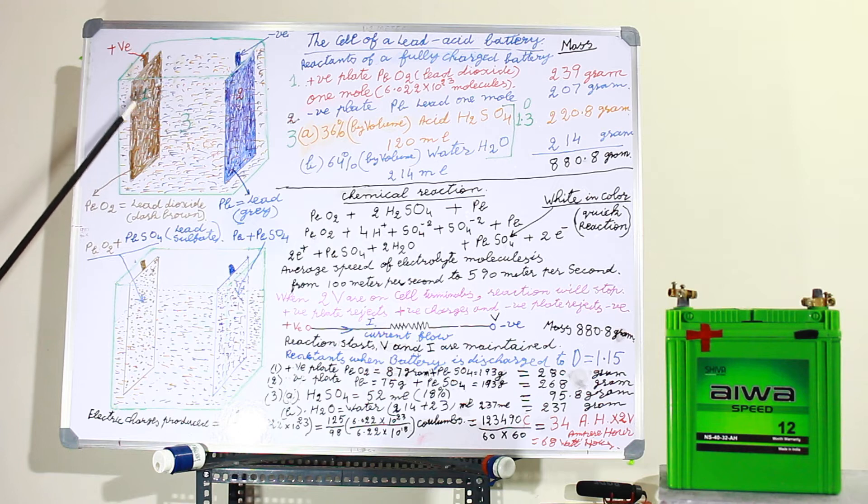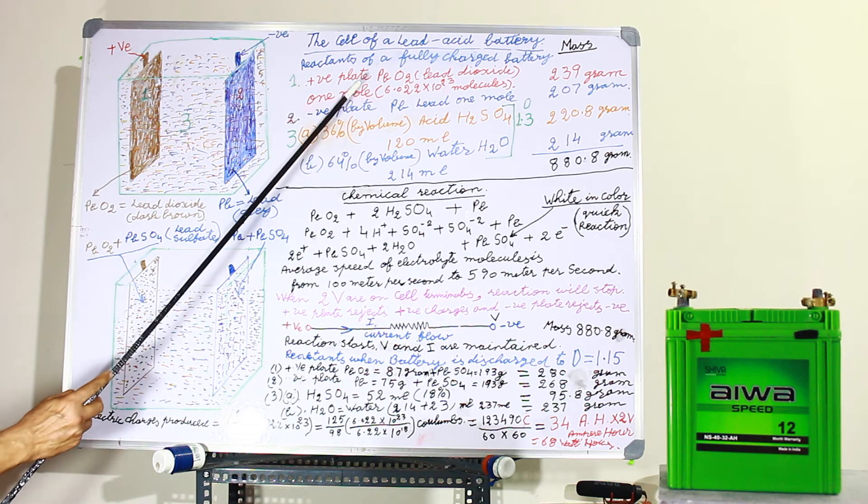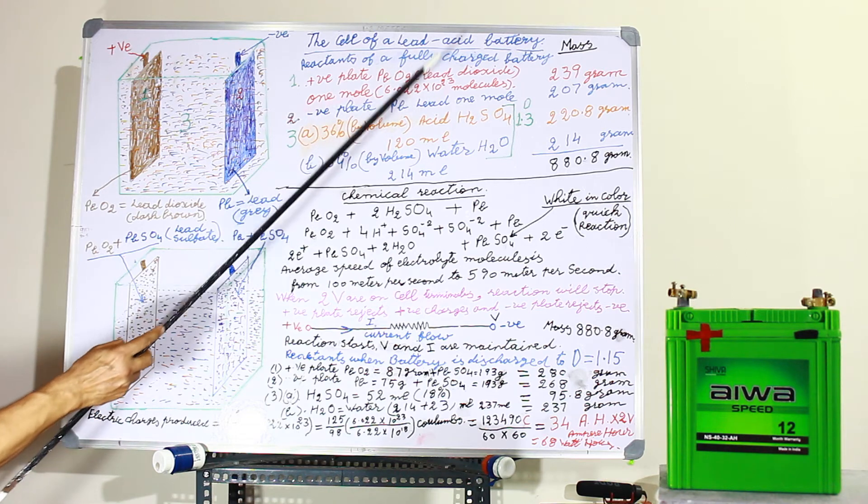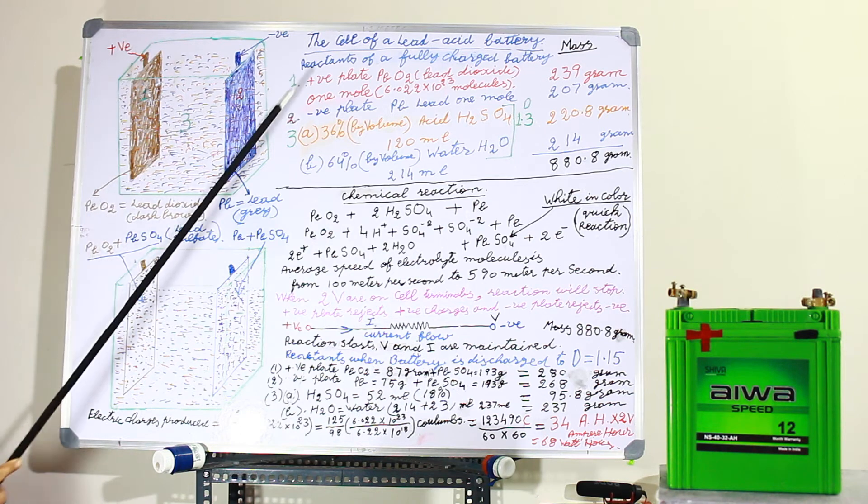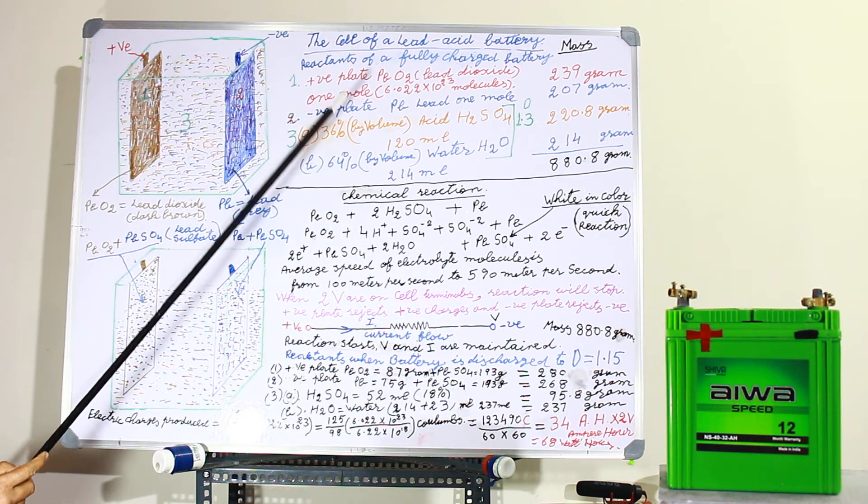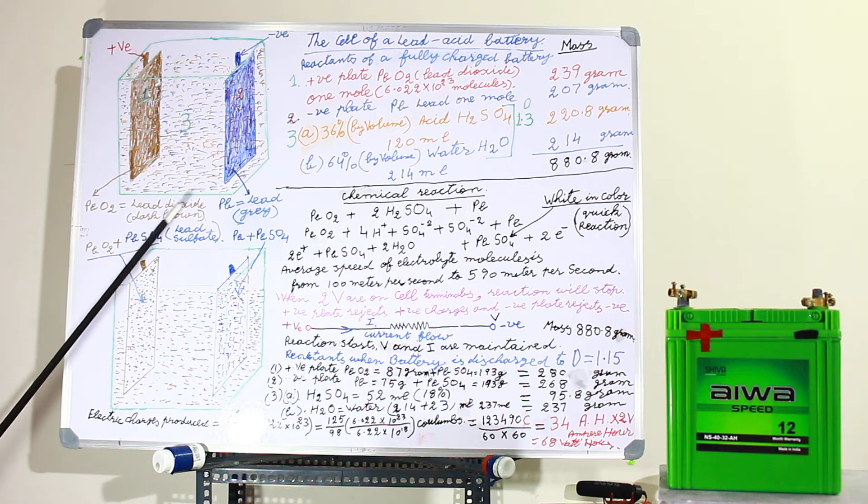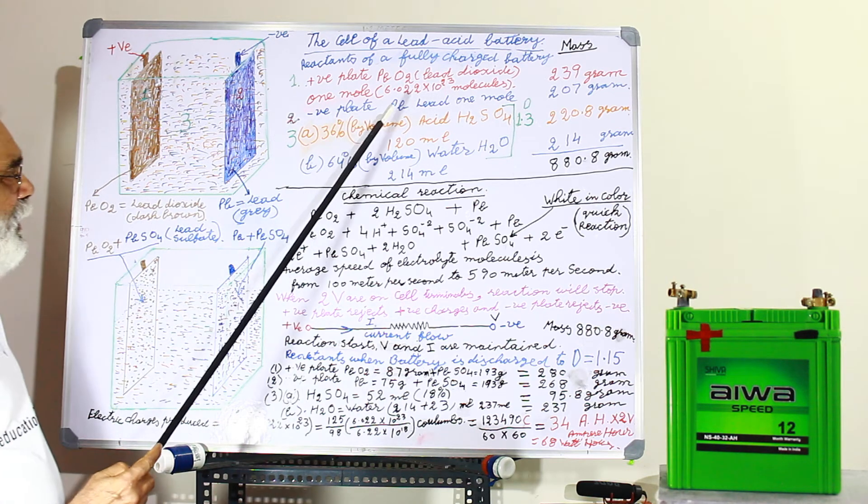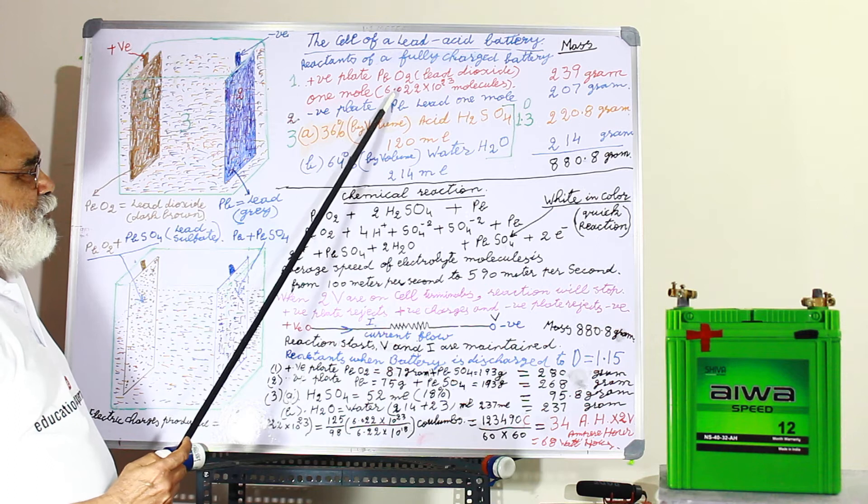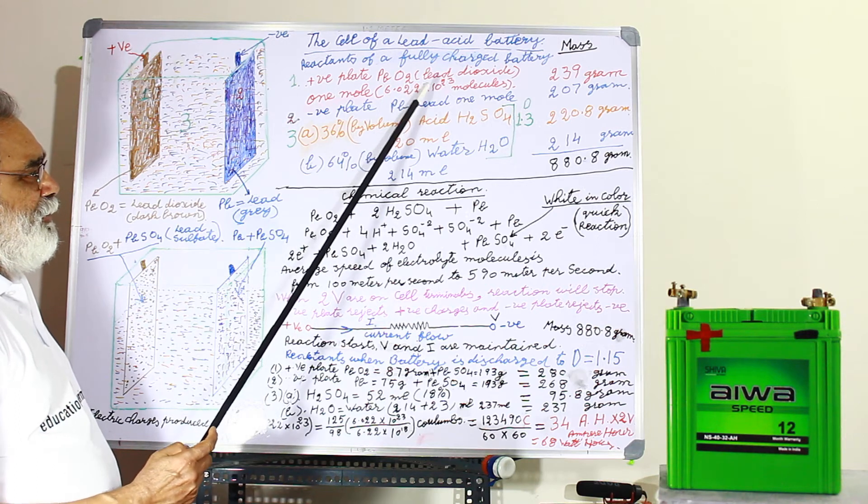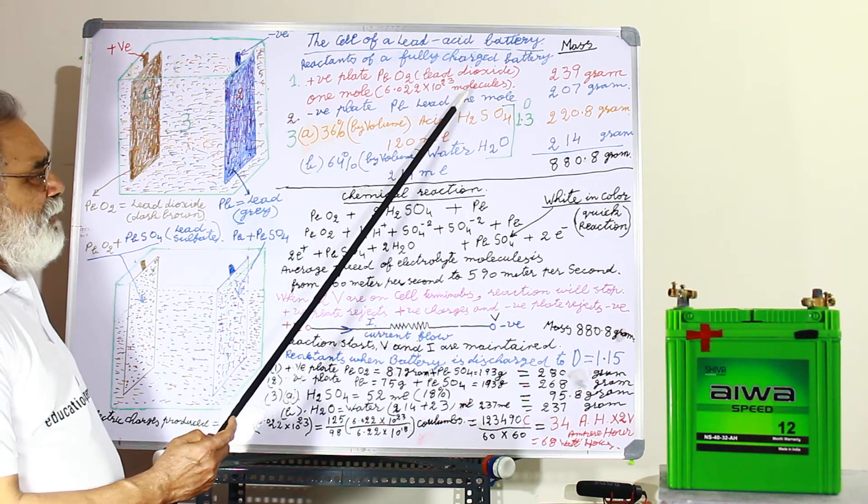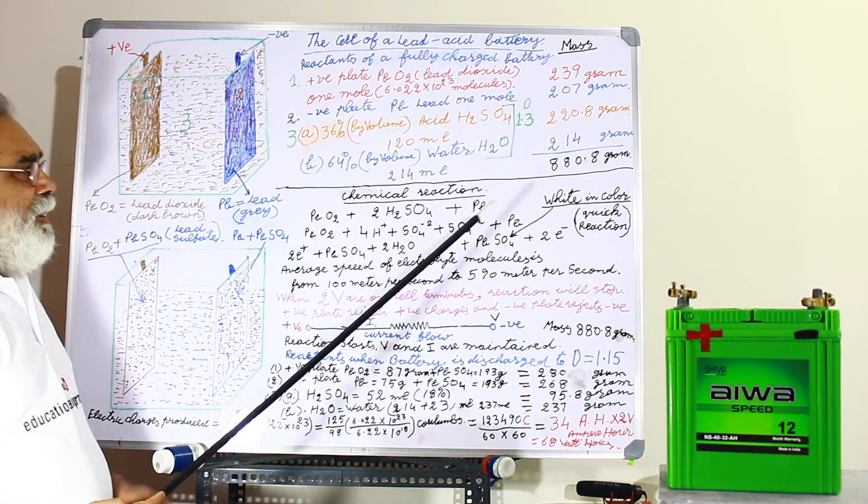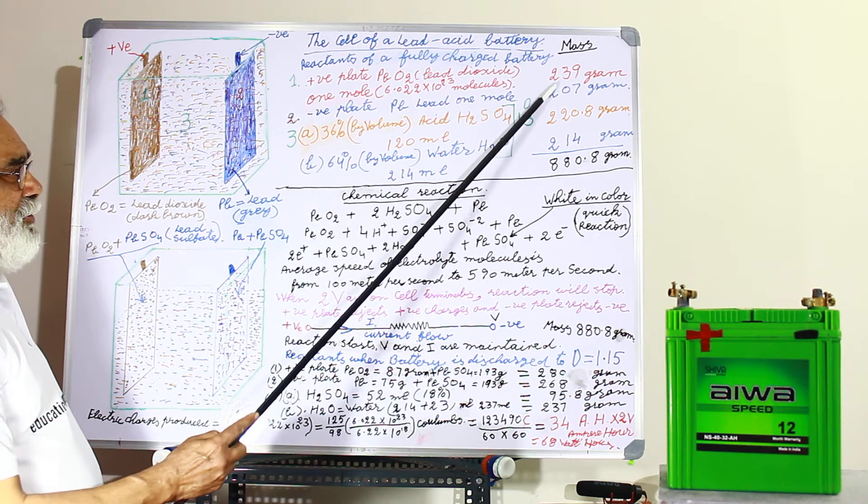Now the first reactant is the positive plate. Here it is. It is PbO2, lead dioxide or also called lead peroxide. It is 1 mole. It is a dark brown color. It has 6.022 into 10 raised to power 23, Avogadro number means that many molecules. Its weight is 239 grams: 207 grams is of the lead and O2 has 32 grams.